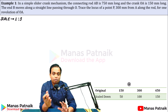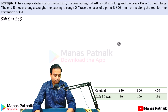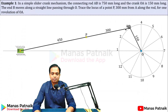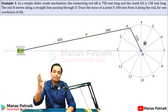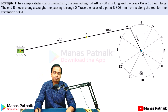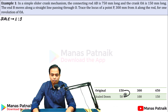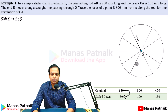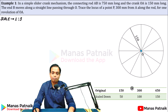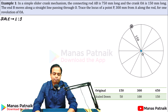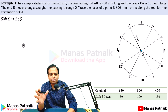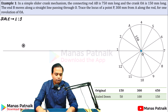First, you need to create a circle representing the crank path. The crank OA is 150 mm in real, which becomes 50 mm on your drawing sheet. Create a circle with radius 50 mm and divide it into 12 equal parts. Draw a line from the center towards the left, and do the numbering of the 12 positions.